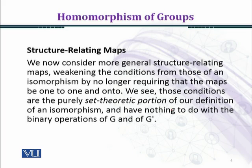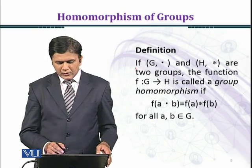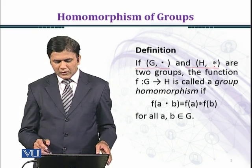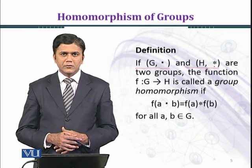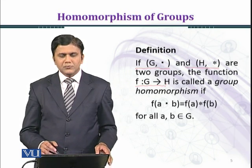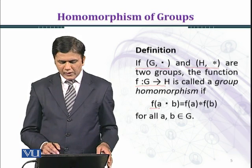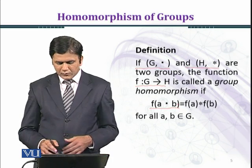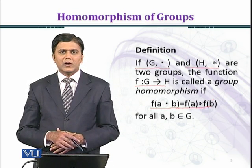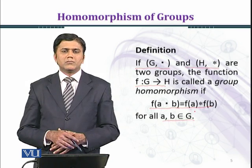These conditions are purely set-theoretic and have nothing to do with the binary operations of G and G prime. Now we define homomorphism: if G under multiplication and H under binary operation star are two groups, the function F from G to H is called a group homomorphism if F(a · b) = F(a) ★ F(b) for every a, b belonging to group G.